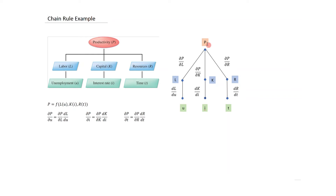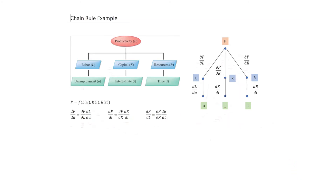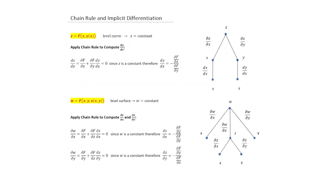The derivative of P with respect to U involves the product of the partial derivative of P with respect to L and the direct derivative of L with respect to U. The same can be done for the remaining two links. We also found the chain rule useful for differentiating implicit functions.